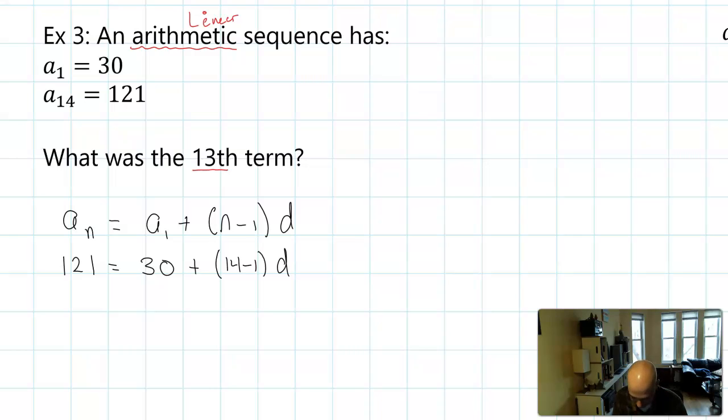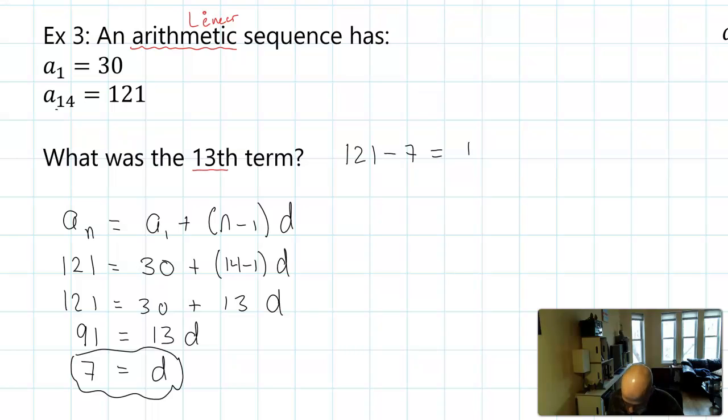So 121 = 30 + 13d. This lets us solve for the common difference in the equation, which we can use to find the 13th term. Let's solve for that. All right, so dividing by 13, we get that 7 = d, which means the sequence is increasing by 7 each time. I could go write the equation out, but it's probably faster if I know the 14th term and I'm looking for the 13th term, I can do 121 - 7, which is 114. That should be the 13th term. To go backwards in the sequence, I'm taking away 7 instead of adding 7.